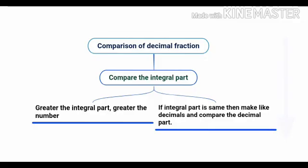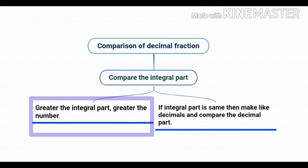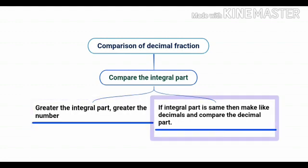Let us discuss the steps how to compare the decimal numbers. First of all, compare the integral part. Greater the integral part, greater the number. If integral part is same, then make like decimals and compare the decimal part.